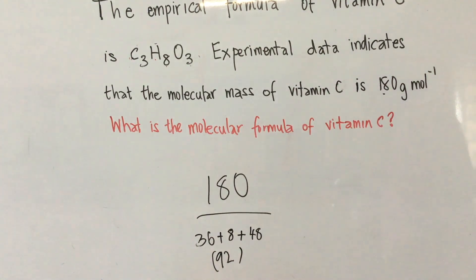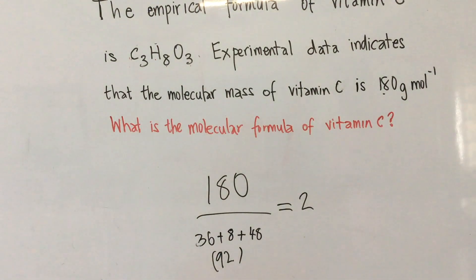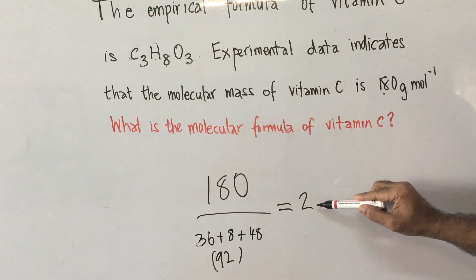180 divided by 92 would give you approximately 2. So, what you then do with that 2 is, you take all of these and you multiply them by 2.